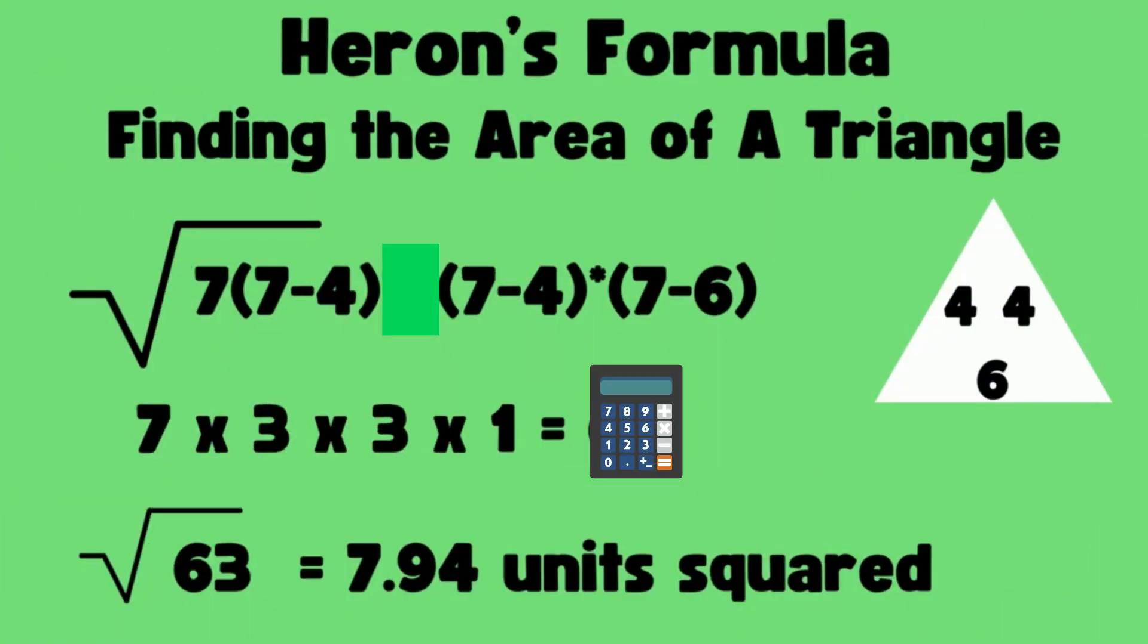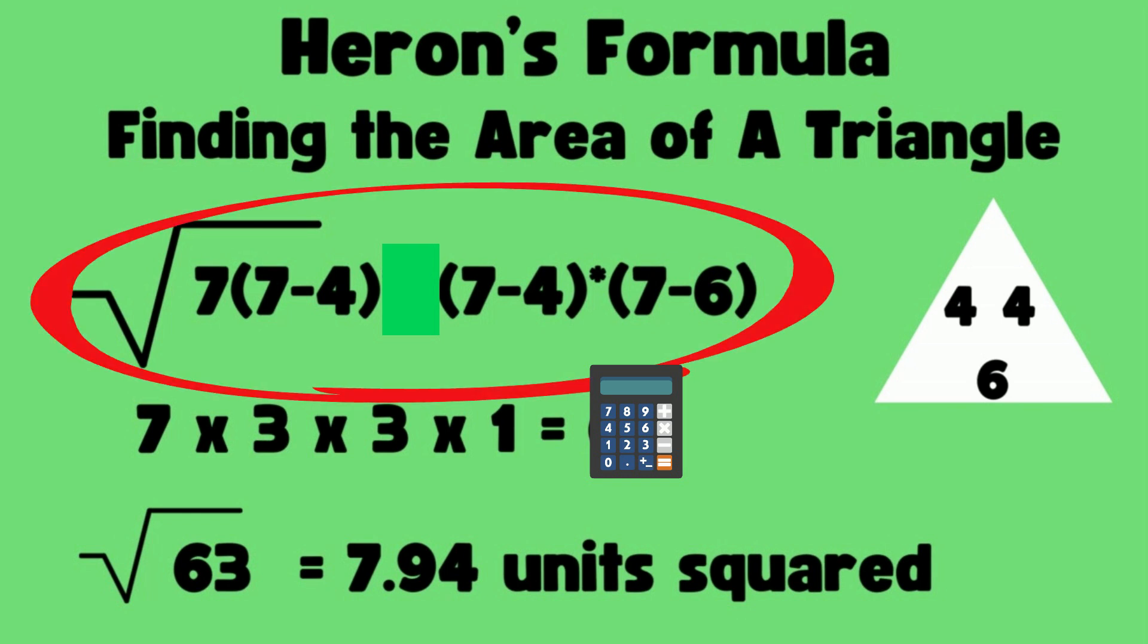Now let's plug it into the formula. I'm going to take the square root of 7 times (7 minus 4), (7 minus 4), and then (7 minus 6).